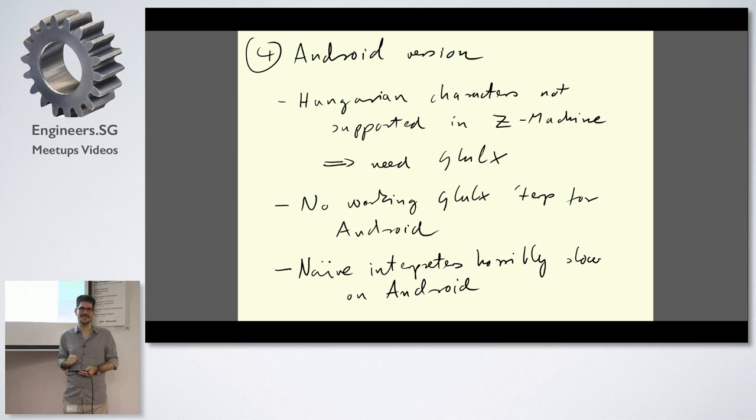This is where the story starts getting interesting. If you want to run it on any platform, you compile into this virtual machine, but the problem is there are two versions and only one supports international characters. The Hungarian language has special accented vowels not available in Latin 1. So you would need a VM format called Glulx, but there is no working Glulx interpreter available for Android.